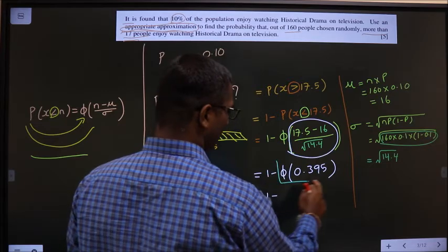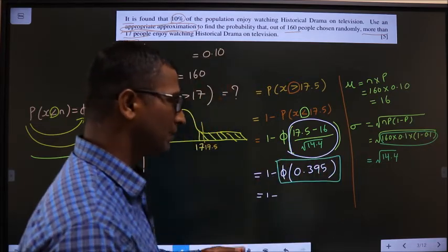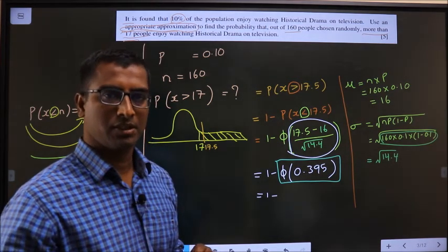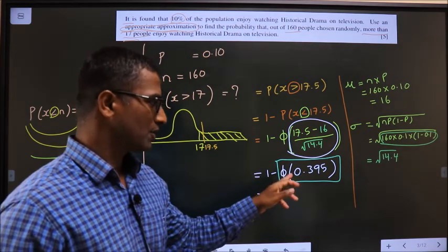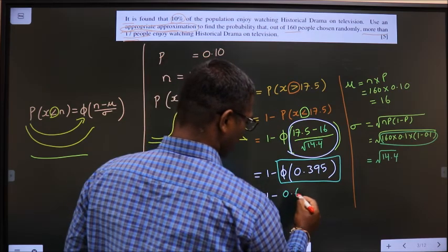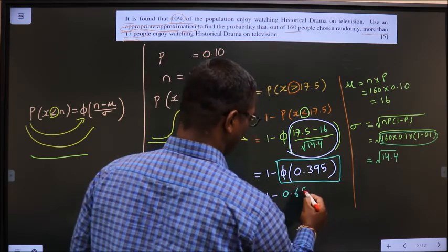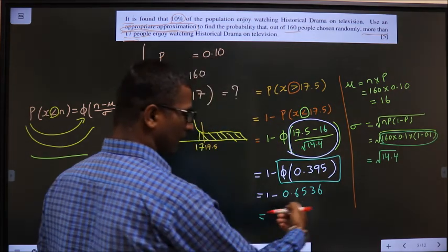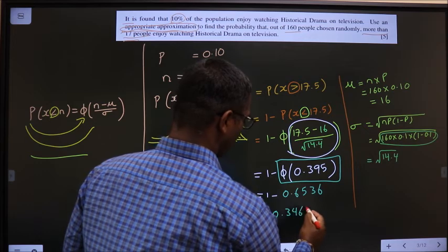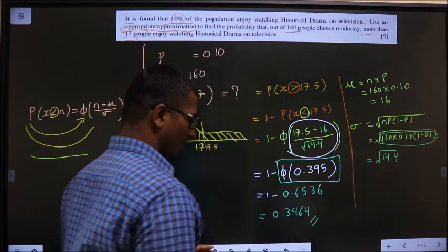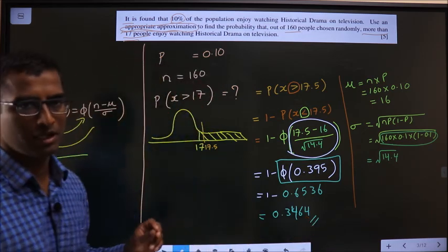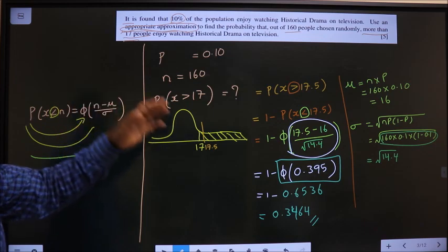This value we get from normal distribution table. If you have doubts in using normal distribution table, look at the playlist given in the description. So this value you should get it to be 0.6536. So 1 minus this will give you 0.3464 is the answer. So whenever normal approximation is told, we use in this way.